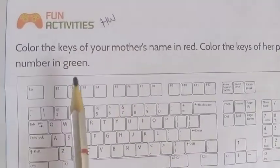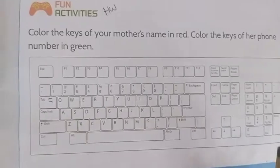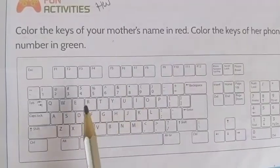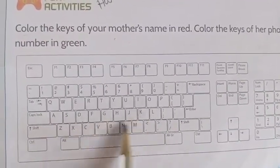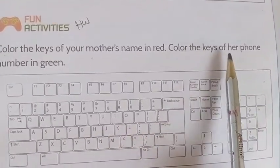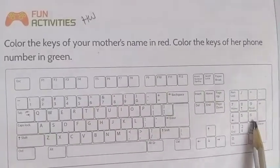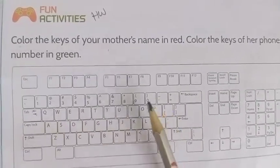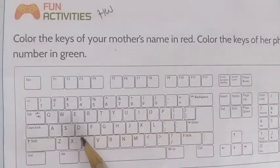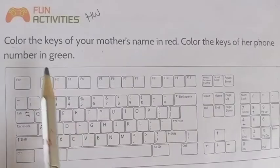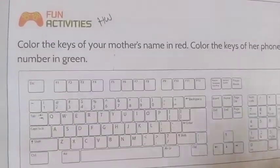This is your homework — Fun Activities. Color the keys of your mother's name in red on the alphabet keys. Color the keys of a phone number in green on the number keys. If there is a double letter like double seven or double W or double A, you only have to color it one time — don't overlap. This is your homework, page number 41.